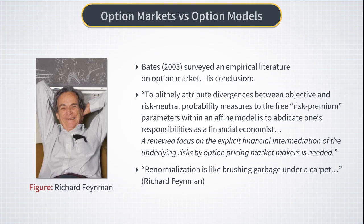In quantum field theory, if you follow the rules of the original model construction and try to compute some physical quantities, you would normally get an infinite number. This happens because you have to integrate over virtual processes of particle creation and annihilation over very small distances, and this produces divergences in integrals that express these observables. This means that quantum field theory is only approximately correct and should be replaced by string theory or something else at ultra-short distances. But quantum field theory instead uses a procedure called renormalization that achieves finiteness by adding so-called counter terms, which are assumed to have the same functional form as the original terms in the model, added with coefficients that ensure cancellations of divergences.